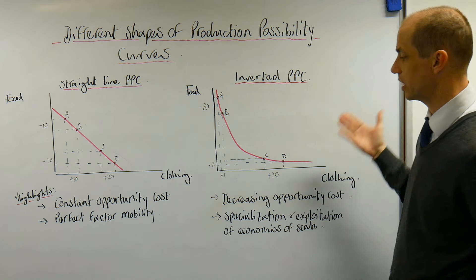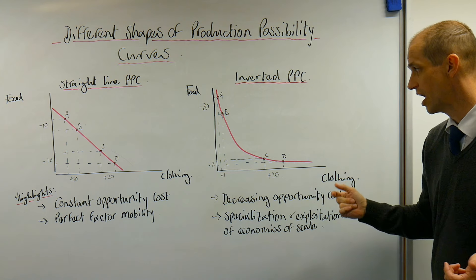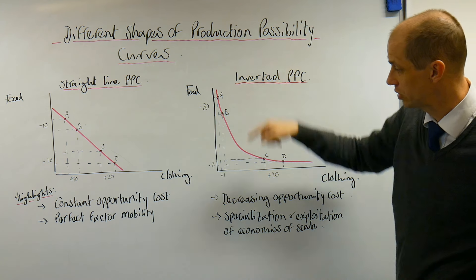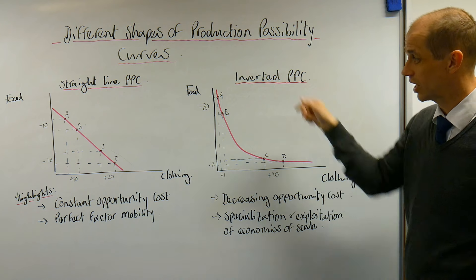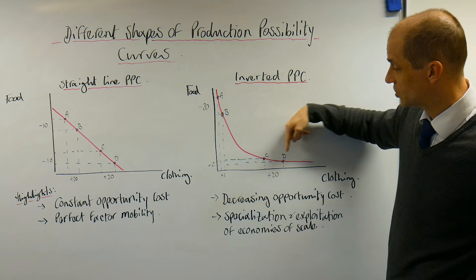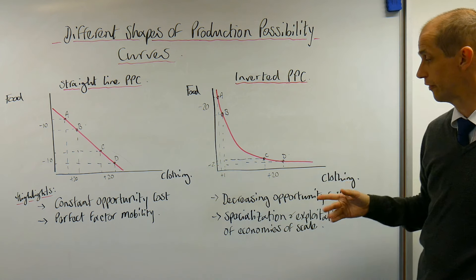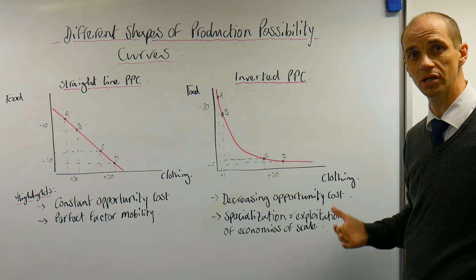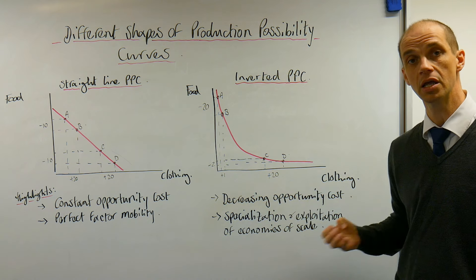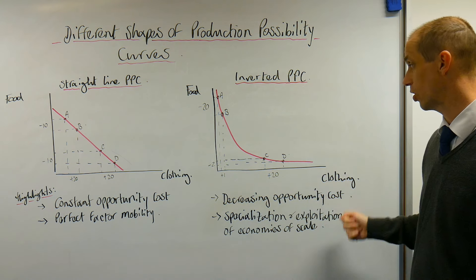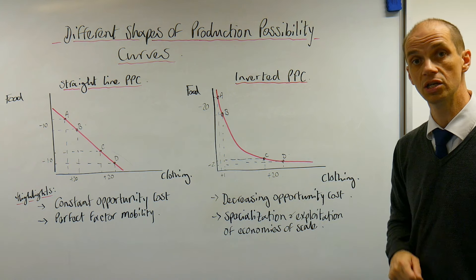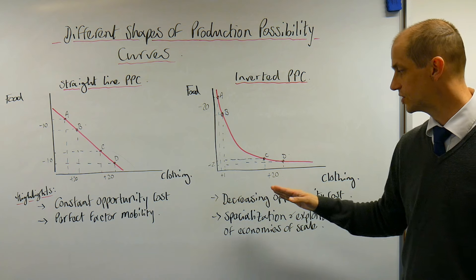The inverted PPC is really useful for understanding decreasing opportunity cost. Moving from point A to B, we give up 20 units of food and gain just one unit of clothing — an enormous opportunity cost. Meanwhile, moving from point C to point D, we give up only two units of food but gain 20 extra units of clothing. This demonstrates decreasing opportunity cost: as you move from C to D, you only have to give up two units of food to gain 20 units of clothing.